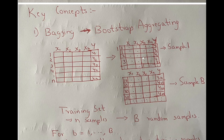Bagged samples are created with replacement. If you look at sample one, it has the same set of features and target, but you will see some samples are repeated and some samples will be left out. This is done in a random fashion. You can create B bagged samples like this — each bagged dataset also has N samples, but some samples will be left out in the process of sampling with replacement.